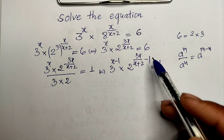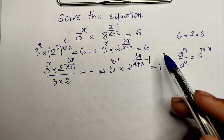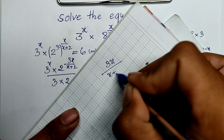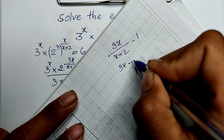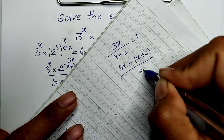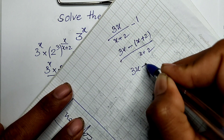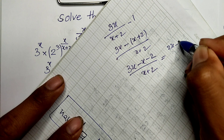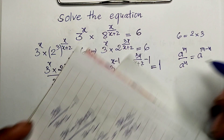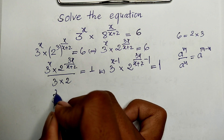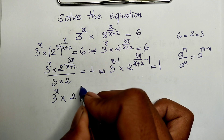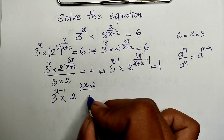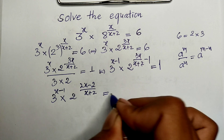This expression 3h divided by h plus 2 minus 1 — I can simplify it: 3h divided by h plus 2 minus 1 gives us 3h minus (h plus 2) all divided by h plus 2, which equals 3h minus h minus 2 divided by h plus 2, and that equals 2h minus 2 divided by h plus 2. So I can now write 3 power h multiplied by 2 to the power of (2h minus 2) divided by (h plus 2), equal 1.